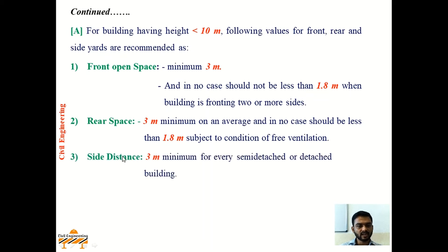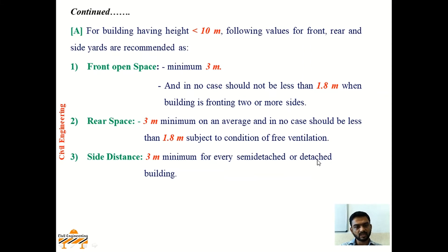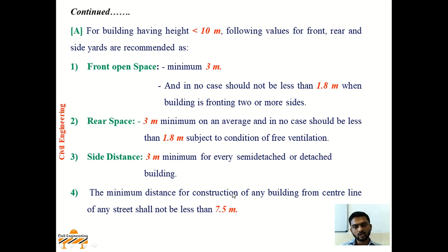Side distance, that is side margin, should be 3 meters minimum for every semi-detached or detached building. A semi-detached building has 3 margins: one side margin, one rear margin, and one front margin. A detached building has margins on all sides — 2 side margins, one front margin, and one rear margin — with minimum side margin of 3 meters. The minimum distance for the construction of any building from the centerline of any street should not be less than 7.5 meters.